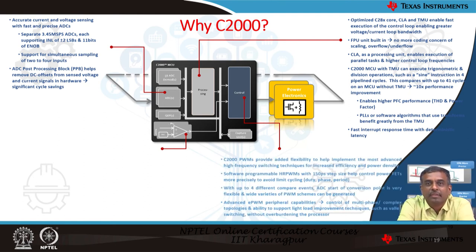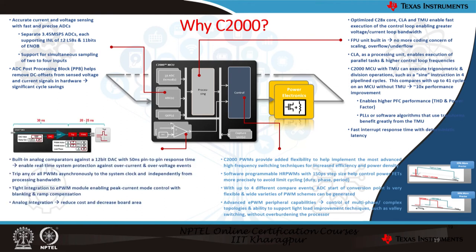C2000 PWMs provide additional flexibility: they manage high-frequency switching, are software programmable, and support up to 4 different compare events. This EPWM capability provides good switching and faster response on the output side. Built-in analog comparators enable even 50-nanosecond pin-to-pin response time, and the ability to trip any or all PWMs asynchronously. The tight integration of PWM with ADCs means that overall latency from sensing through processing to control is significantly reduced in C2000.